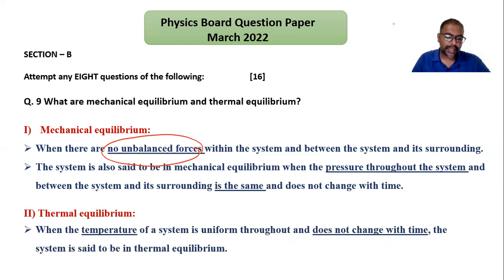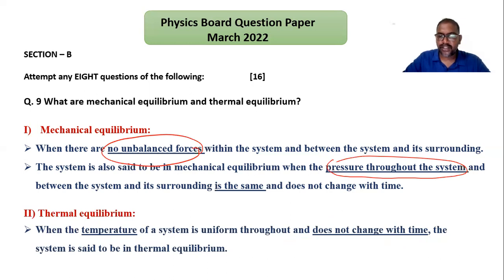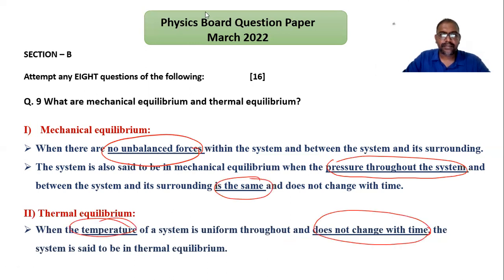To summarize: for mechanical equilibrium, the keywords are no unbalanced force and pressure throughout the system is the same. For thermal equilibrium, temperature does not change with time — temperature is constant. These are the key definitions to remember.